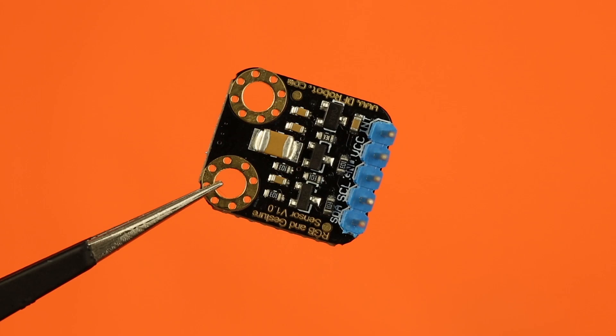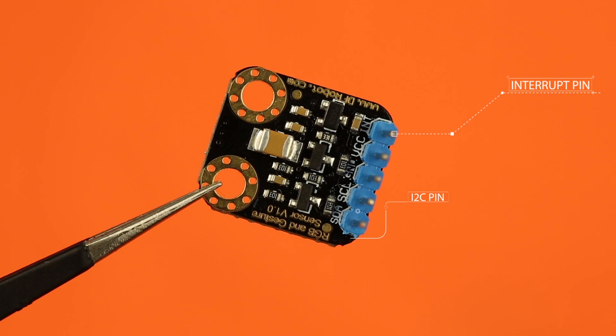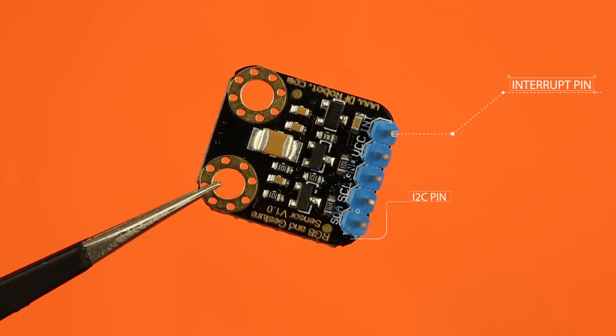The gesture sensor communicates with microcontrollers through a wide interrupt pin and two I2C digital pins. With two other power pins, it has a total of 5 pins.